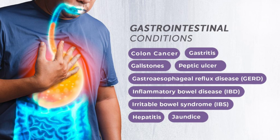Primary biliary cirrhosis — three M's: middle-aged female, raised IgM, anti-mitochondrial antibody positive. Presentation: pruritus, raised ALP, jaundice, association with Sjögren's syndrome. Primary sclerosing cholangitis: similar features (pruritus, jaundice, raised ALP) but associated with ulcerative colitis and no anti-mitochondrial antibody. Diagnose PSC via ERCP; diagnose PBC via positive anti-mitochondrial antibodies.